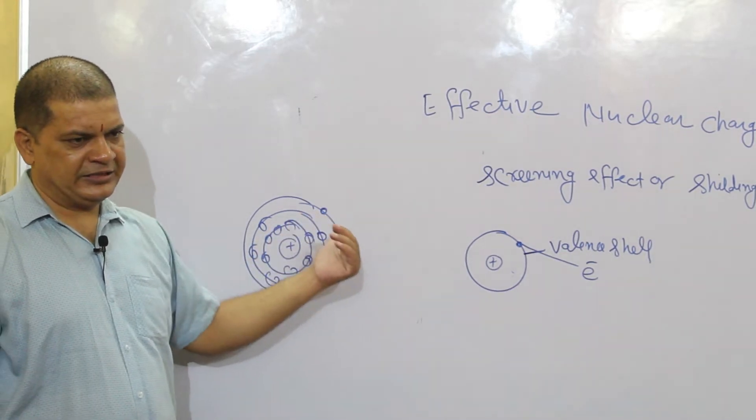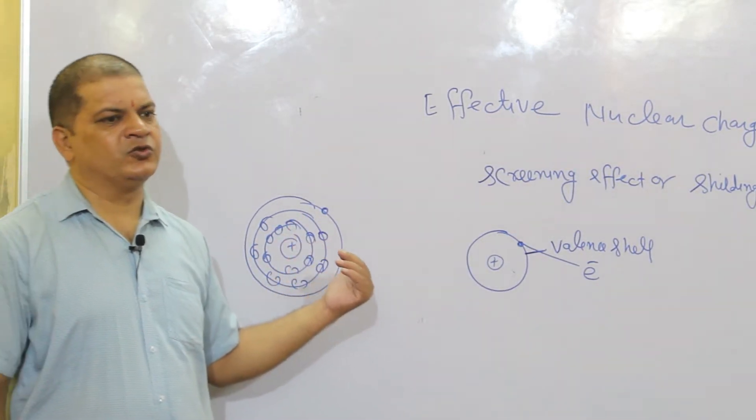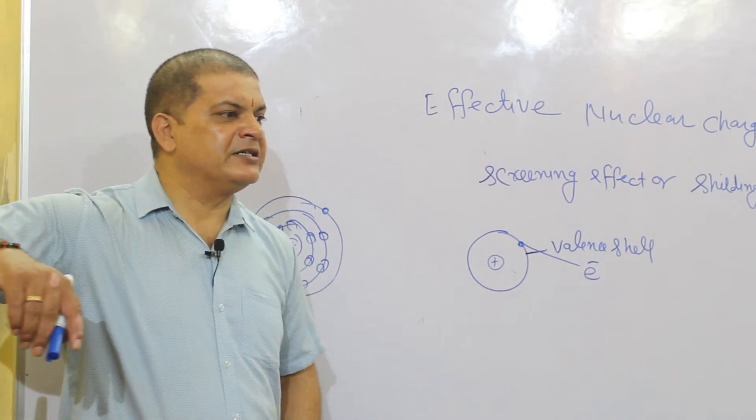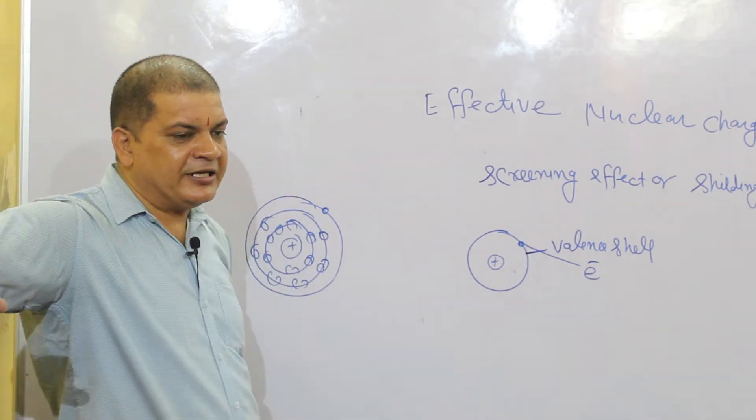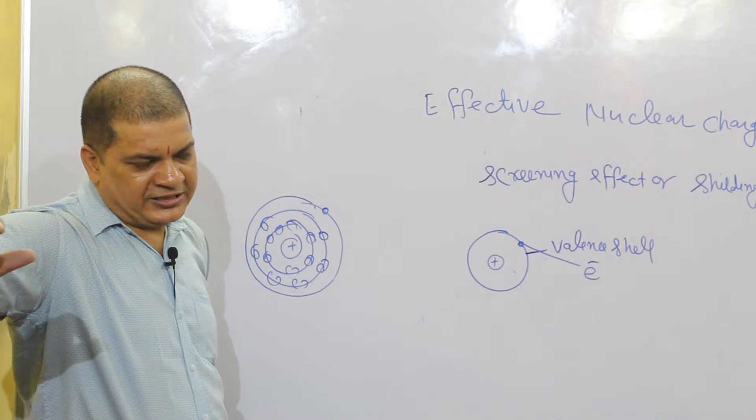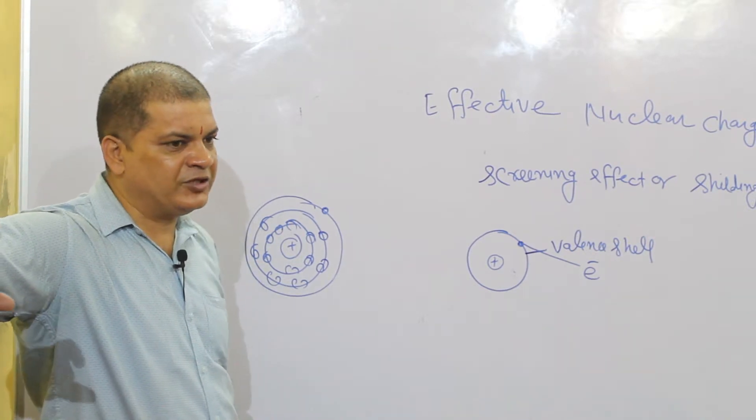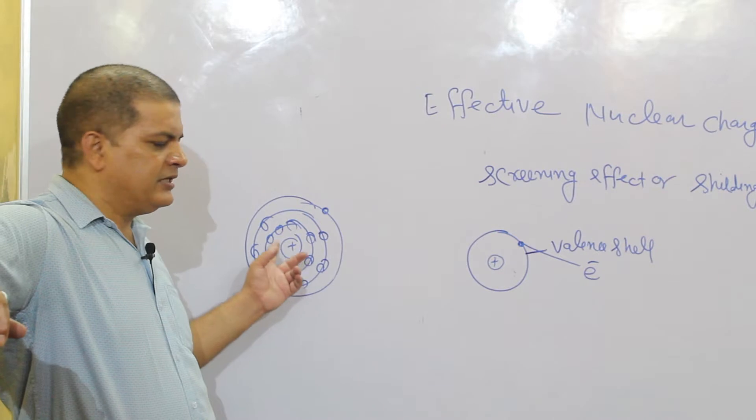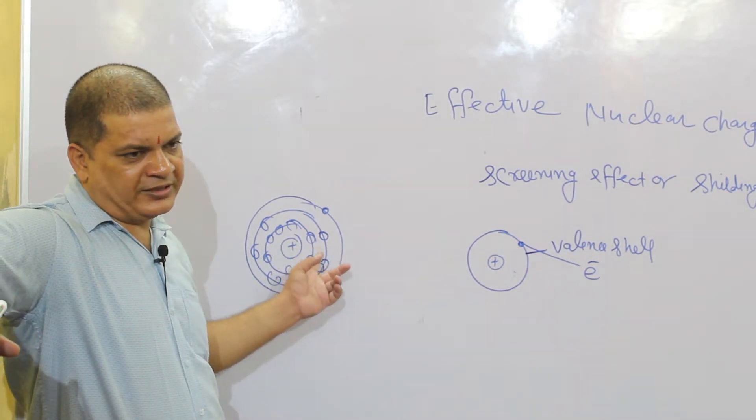In the inner shells, the electrons increase. When the number of electrons increases, they will screen the nucleus.